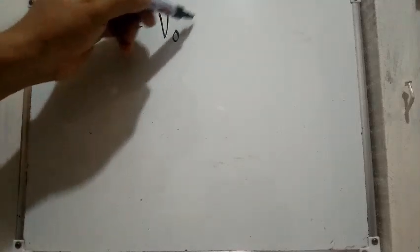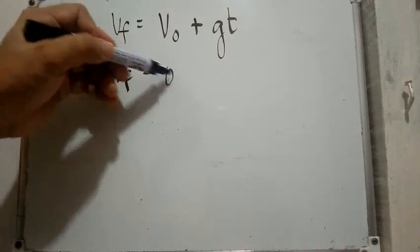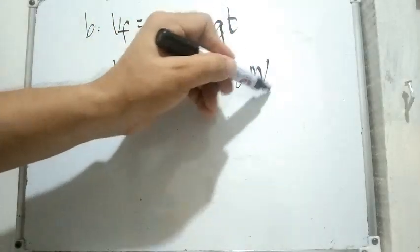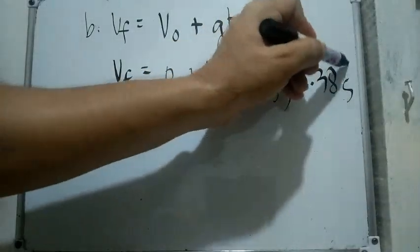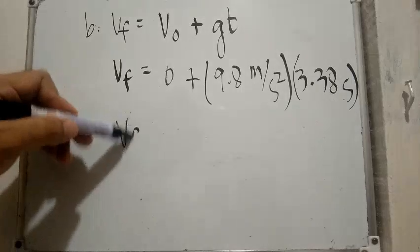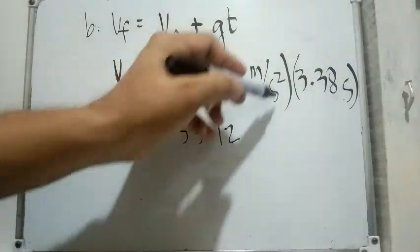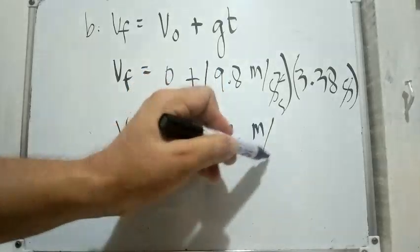For letter B, final velocity equals v sub o plus g times t. So v sub f equals zero plus 9.8 m/s² times 3.38 seconds — the one unit of seconds cancels — so we have v sub f equals 33.12 meters per second.